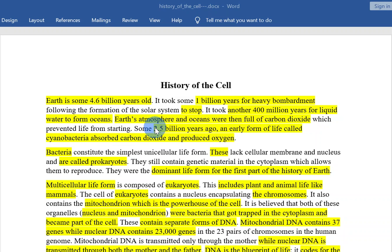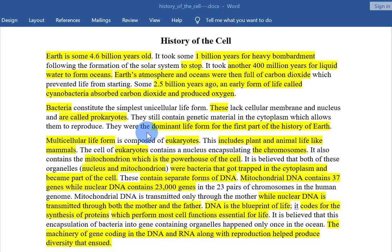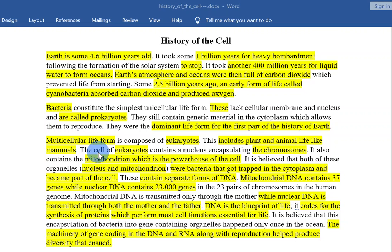Some 2.5 billion years ago, an early form of life called cyanobacteria absorbed carbon dioxide and produced oxygen. Bacteria constitute the simplest unicellular life form. These lack a cellular membrane and nucleus and are called prokaryotes. They still contain genetic material in the cytoplasm which allows them to reproduce. They were the dominant life form for the first part of the history of Earth.